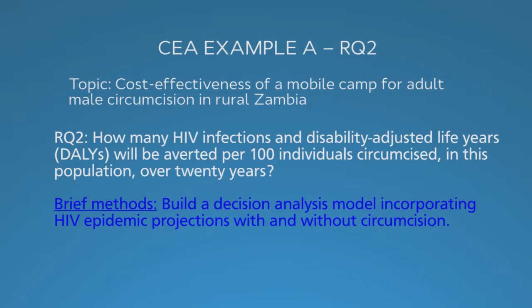Question 2 asks how many HIV infections and disability-adjusted life years will be averted. This assessment usually builds on empirically observed effects — HIV studies show that male circumcision reduces HIV incidence by about 50%. However, we need to go further analytically and can build a decision analysis model, since how many total infections are prevented depends on the HIV acquisition risk in the specific population. To quantify averted infections in the future requires a projection of HIV risk over time, and translating these into DALYs requires assigning a DALY burden to each HIV infection, which can be calculated or taken from past studies.